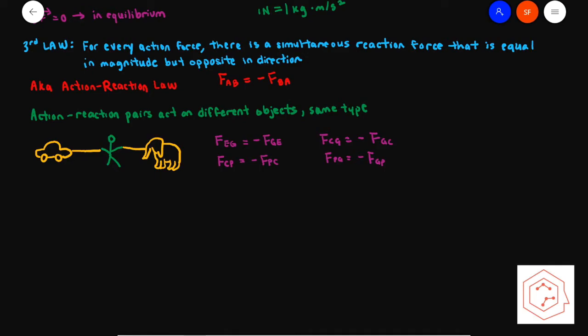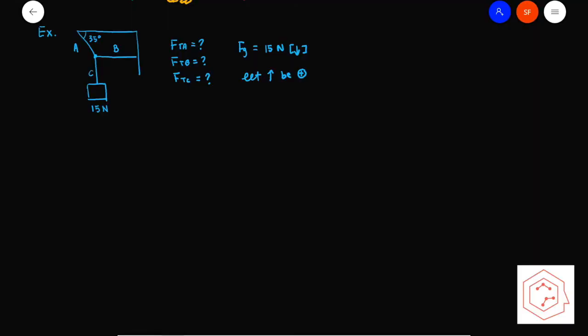Similarly, the force of the car on the ground equals the negative of the force of the ground on the car, and the force of the person on the ground equals the negative of the force of the ground on the person. Now to consolidate our knowledge, let's go through some examples and work through them together.